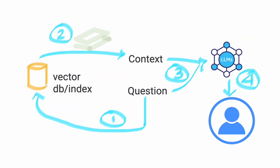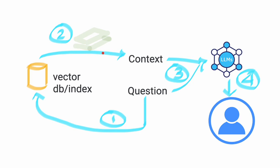Step one: a user provides a question, and that question queries a vector database. The vector database comes back with relevant results — similar results based on that question — via a similarity search. It provides a small subset of vectors based on documents or a collection of document vectors, which can be passed back into the context.